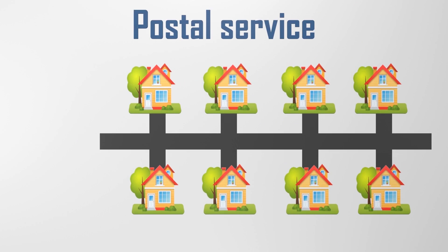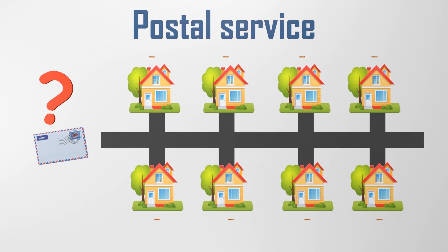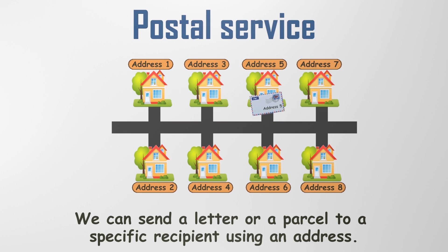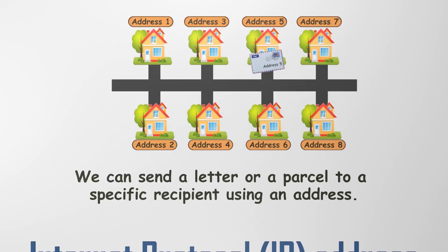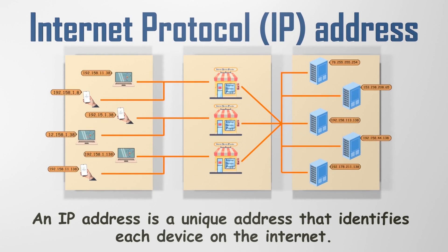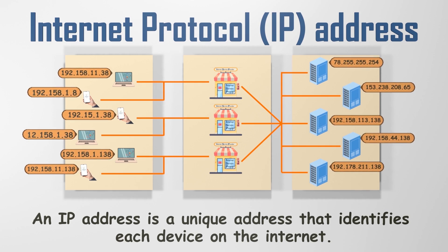Consider our postal services. Despite there being billions of people and households worldwide, we can still send a letter or a parcel to a precise recipient. This is enabled by the use of an address — each home has a unique address to ensure accurate delivery. Similarly, to identify each device connected to the Internet, we use a specific kind of address, known as the Internet Protocol, or IP address.